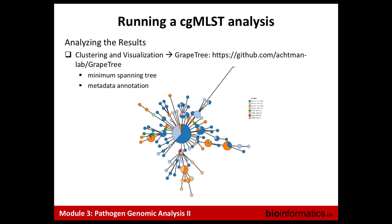Once you've run it and have CGMLST types assigned, you can visualize that through something like GrapeTree or Filoviz as a minimum spanning tree — these are the eBURST groups I talked about earlier. You can annotate these with metadata, because as Will mentioned, sequence on its own is meaningless — you have to connect it to some form of metadata to draw any interpretations.